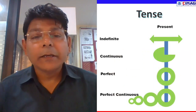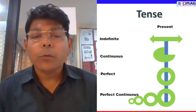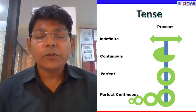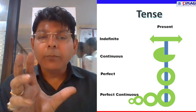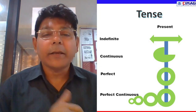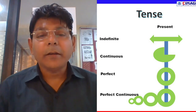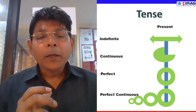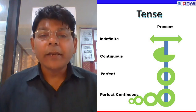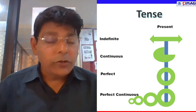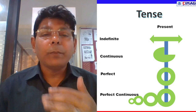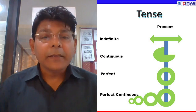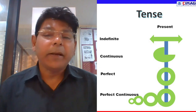अब इन सारे tenses को हम लोग चार broad sub-categories में बाँटते हैं — चाहे present tense हो, past tense हो, या future tense हो. ये तो main broad category होती है, बाद में हम इसे sub-categories में बाँटते हैं. पहली sub-category जिसे हम indefinite यानि simple के नाम से जानते हैं — जो बात normally कही जाए. दूसरी category बनती है continuous की, यानि जिसमें motion हो, जिसमें काम के होने का जिक्र हो रहा हो. ध्यान रहे, tense हमेशा किसी काम के बारे में ही बात करता है.